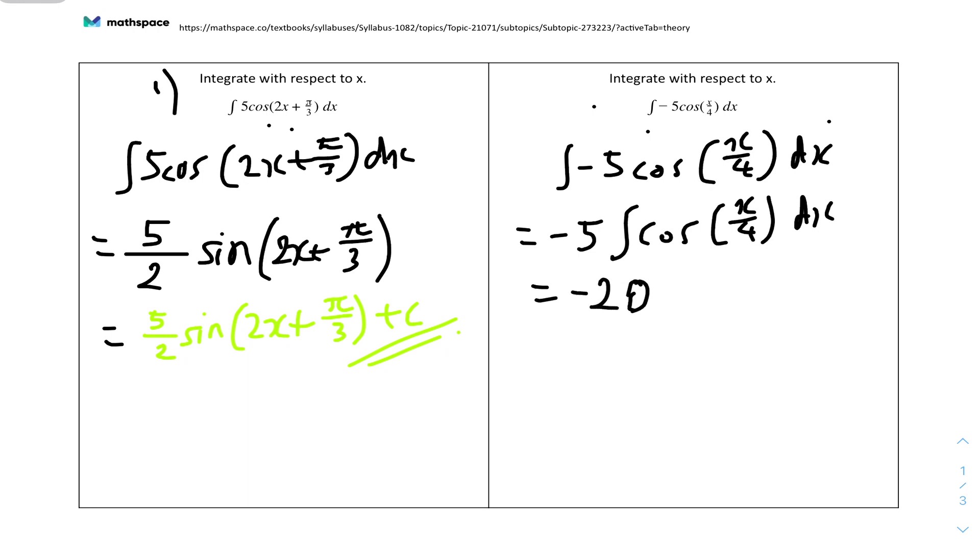And now you have to integrate the cos which gets sine. So it will be sine and then the bracket will be just x over 4. Rewrite it with the plus c so we don't forget: minus 20 sine(x over 4) plus c. And that's the answer.